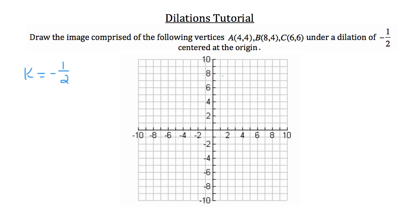The first thing we do is plot points A, B, and C. Point A is at (4, 4), point B is at (8, 4), and point C is at (6, 6). With those three points plotted, we connect them to form triangle ABC. Now let's write out those original coordinates: A is (4, 4), B is (8, 4), and C is (6, 6).